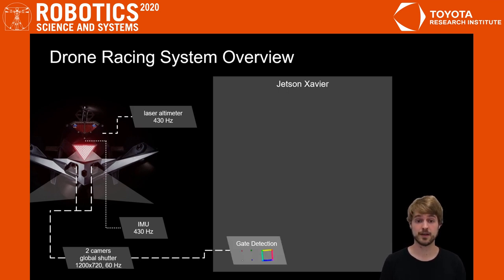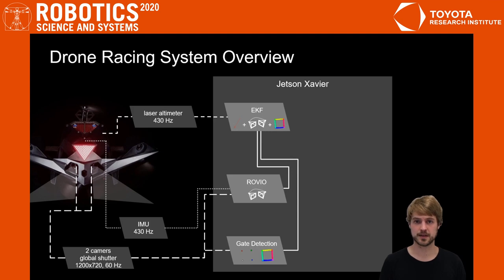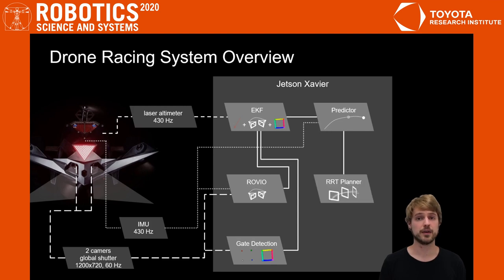We use the two camera feeds to perform gate detection. Simultaneously, we run a visual inertial odometry pipeline, the output of which we fuse with the gate detections and the altimeter measurements in an extended Kalman filter. This improved estimate is then predicted forward in time using the IMU measurements to compensate for delays, and we use an RRT planner to obtain near-time optimal trajectories, which we can execute with a PID controller.